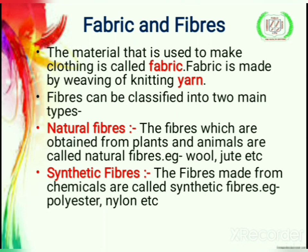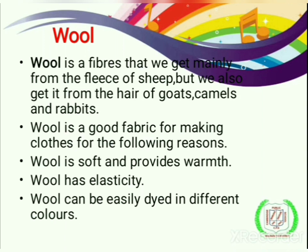Wool is a fiber that we get mainly from the fleece of sheep, but we also get it from the hair of goats, camels, and rabbits. Wool is a good fabric for making clothes because it is soft and provides warmth, it has a lot of elasticity, and it can be easily dyed in different colors.